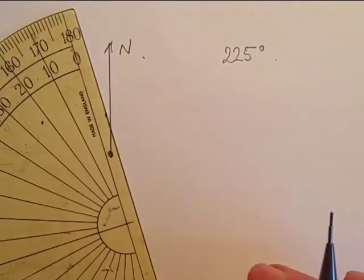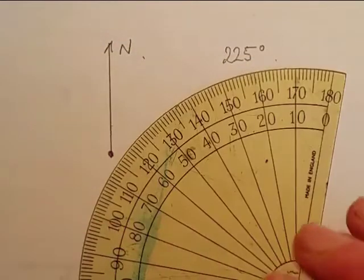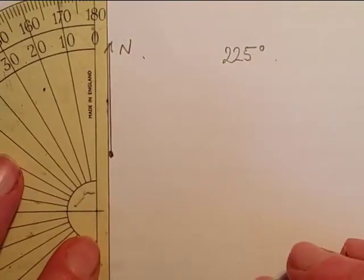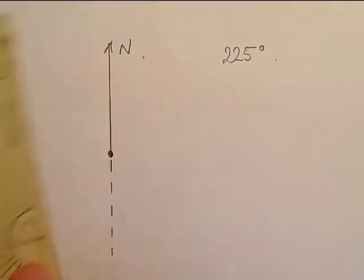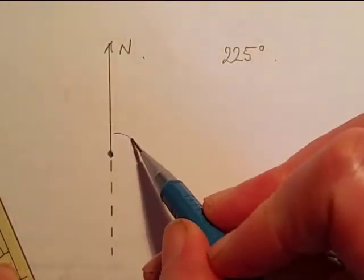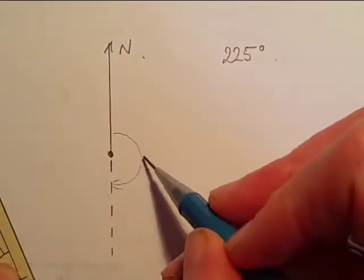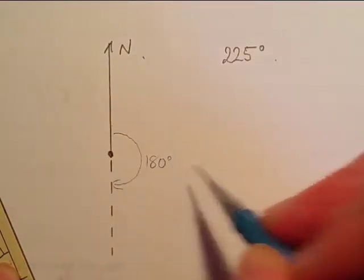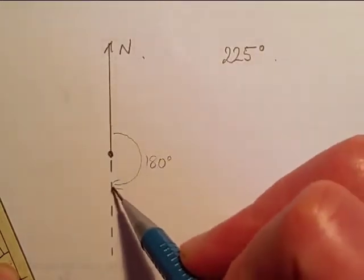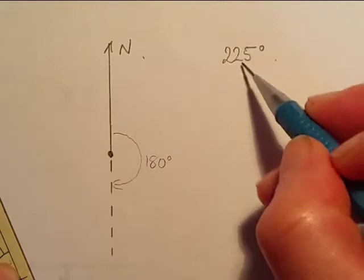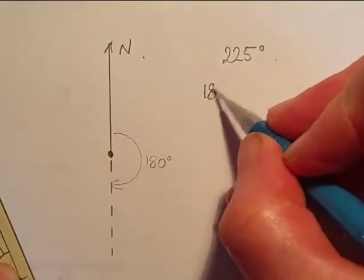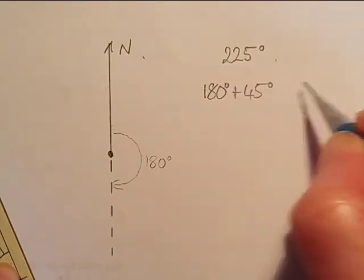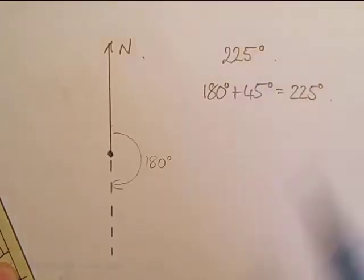Now 225 degrees we can't measure that directly with the protractor, but what we can do is extend this line down a wee bit - we can put a dotted one or a faint one. We know that it's 180 degrees from there around to there. So we've got 180 around to there, we need another 45 degrees to get round to the bearing we actually want. We want 180 degrees plus 45 degrees to get us to our 225 degrees.